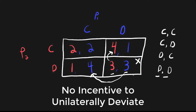How about if player two confesses and player one doesn't? Can player two benefit by switching his strategy from confess to don't confess? If player two changes his strategy from confess to don't confess while player one plays don't confess, his utility goes from four to three. So player two does not have an incentive to deviate. How about player one? If player two is confessing and player one has his mouth shut, does player one have an incentive to switch from don't confess to confess? He does, because he prefers two over one.